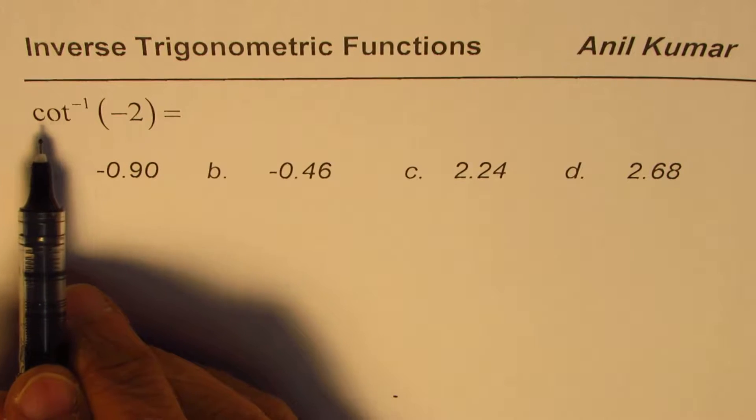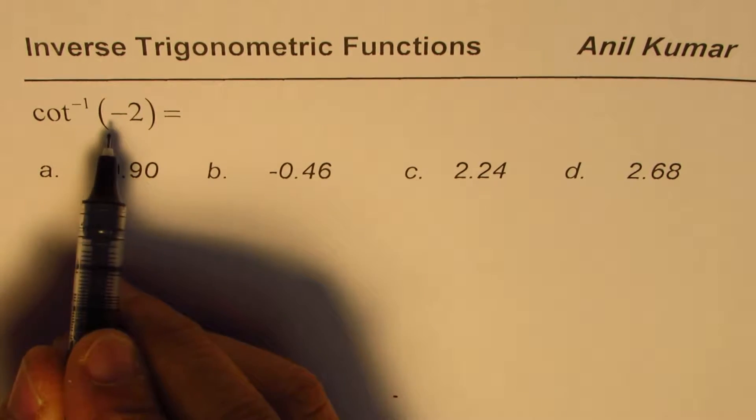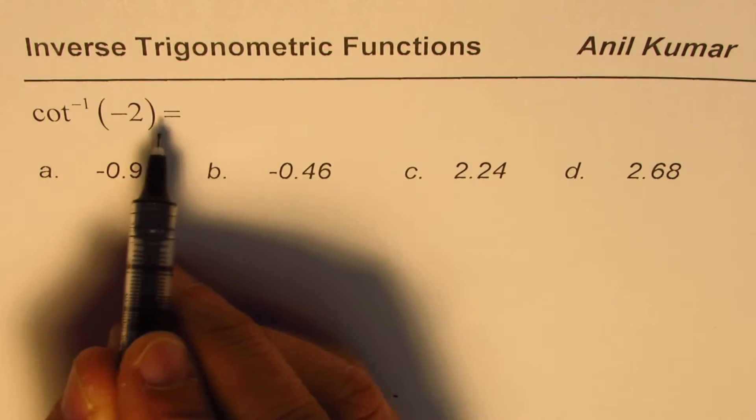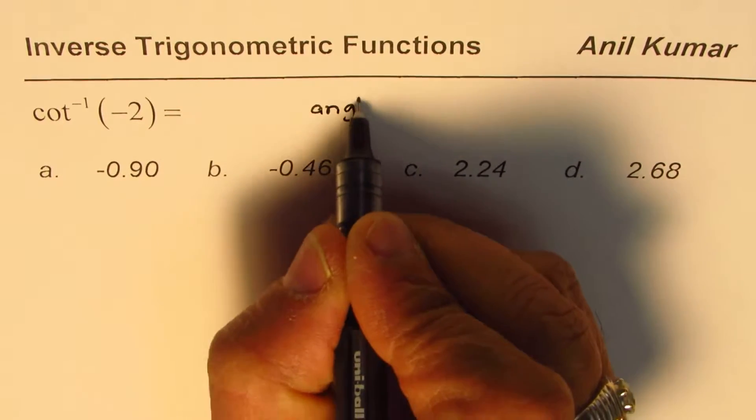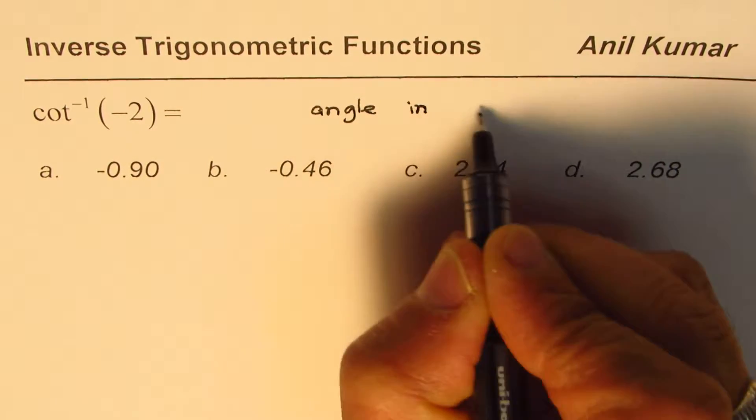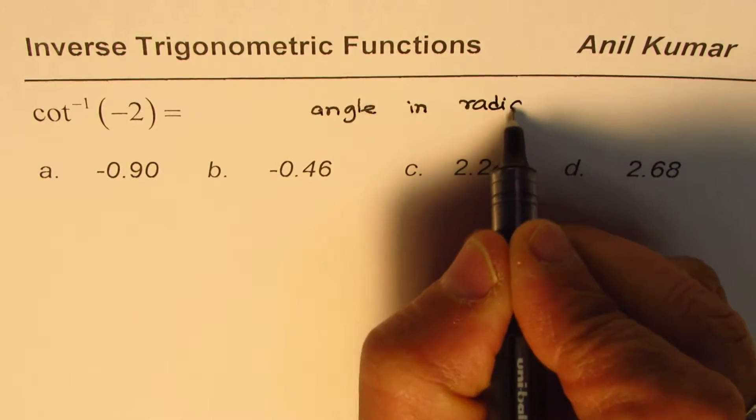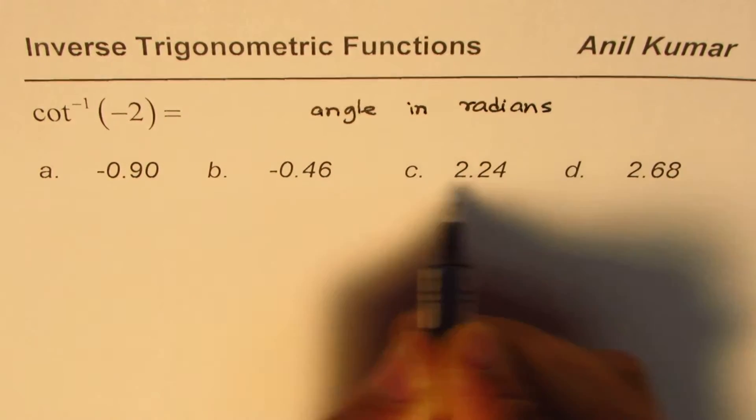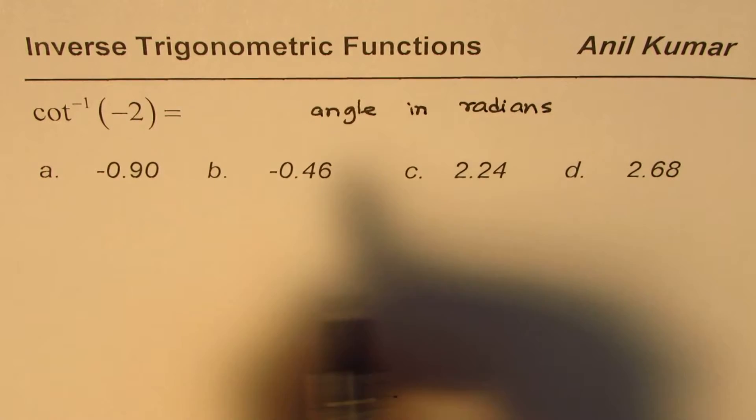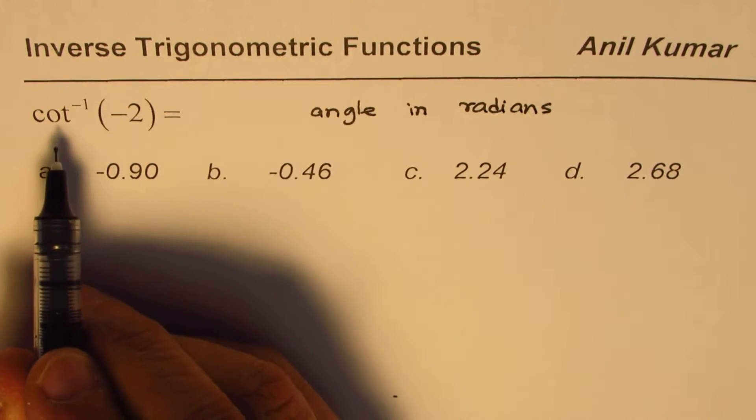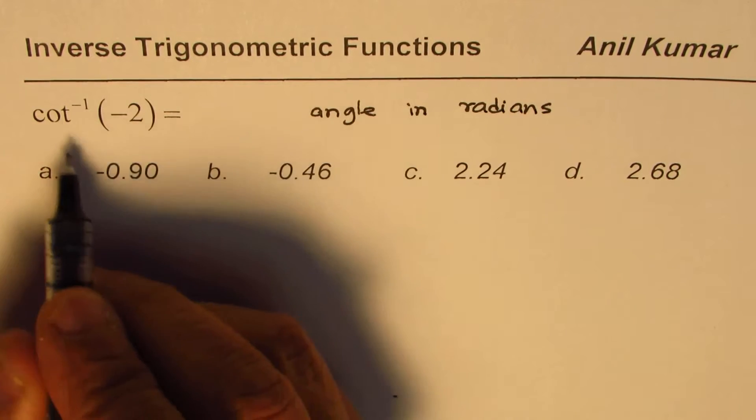As you know, this value will return angle in radians. So this value is angle in radians. What we have here is all angles in radians. Now let's estimate the value. The cot inverse function is defined in which interval?